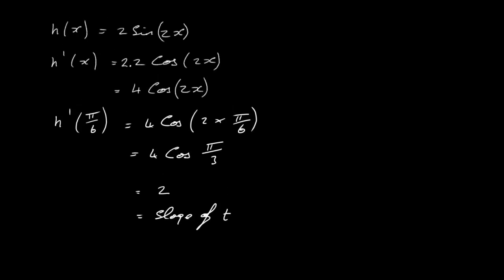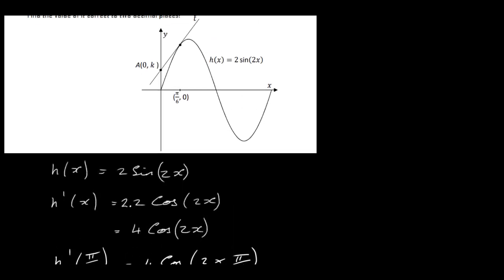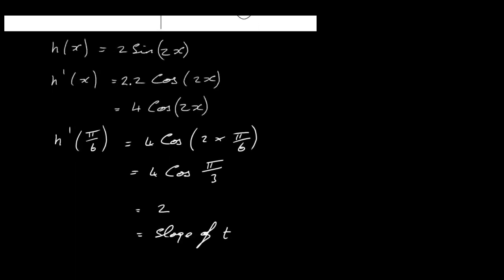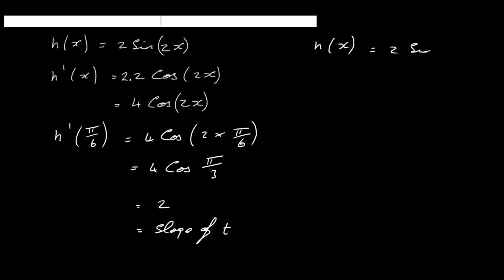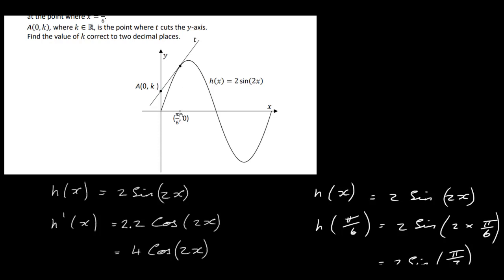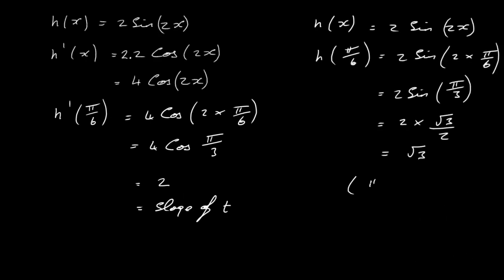Now I need a point on the line. The x value is pi over 6, so I find the y value using h of x equal to 2 sine 2x. h of pi over 6 equals 2 sine of 2 times pi over 6, which is 2 sine pi over 3. Sine of pi over 3 is root 3 over 2, so that gives 2 times root 3 over 2, which is root 3. So the point on the tangent is (pi over 6, root 3).